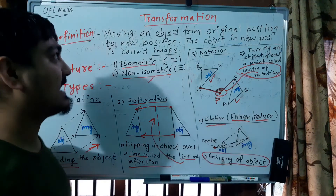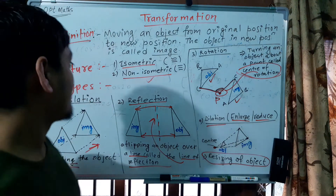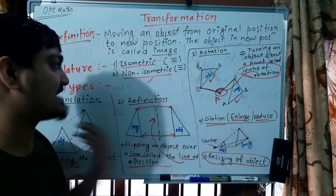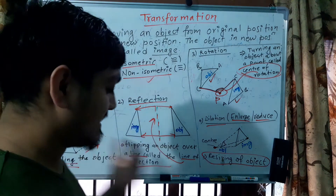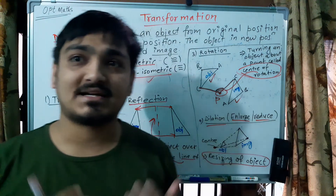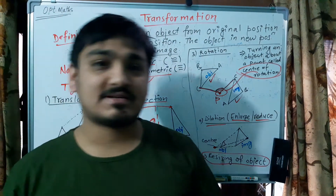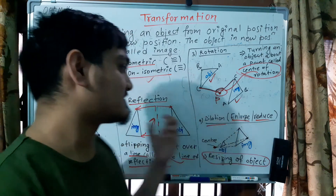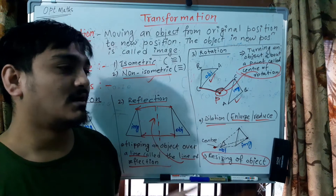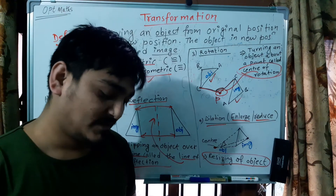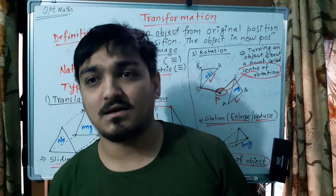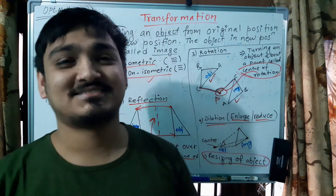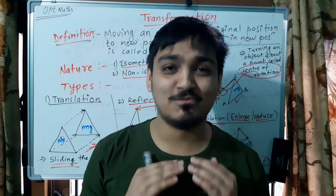So today we have covered transformation: what transformation is, the nature of transformation — isometric and non-isometric — and there are four types of transformation. In the next video, I will cover translation. Until then, keep watching and keep loving us. Thank you. Bye-bye.